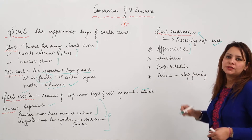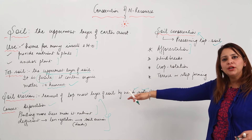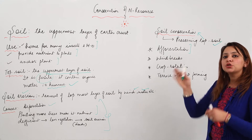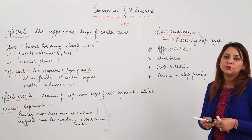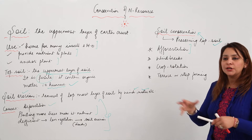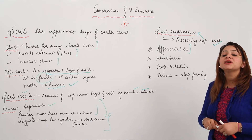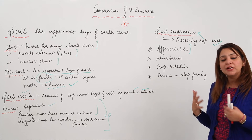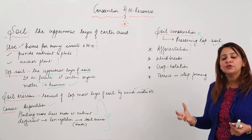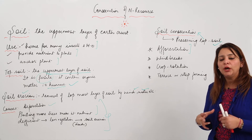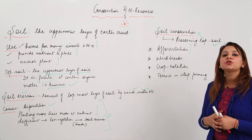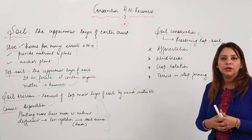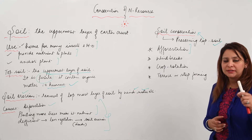One way to practice soil conservation is afforestation. Since deforestation leads to soil erosion, afforestation can control soil erosion to a large extent. Afforestation means planting more trees. When you plant more trees, they hold the soil firmly so it cannot be easily carried away by wind or water.